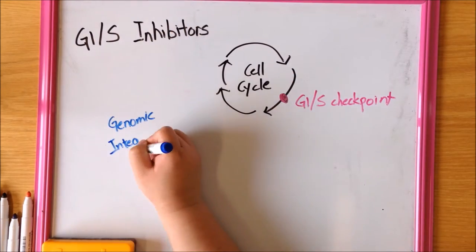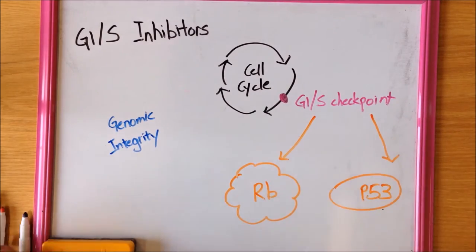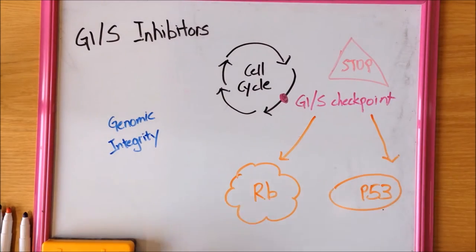If DNA is damaged, tumor suppressor genes such as RB and P53 halt the cell cycle at this checkpoint, thus preventing progression into the S phase.